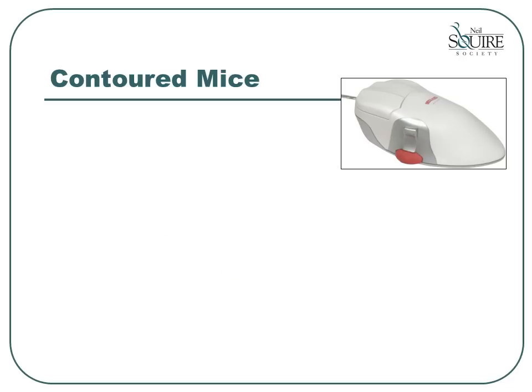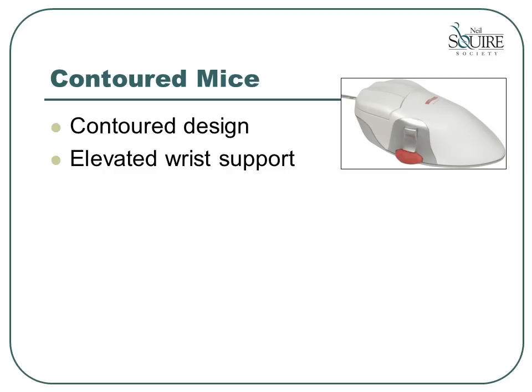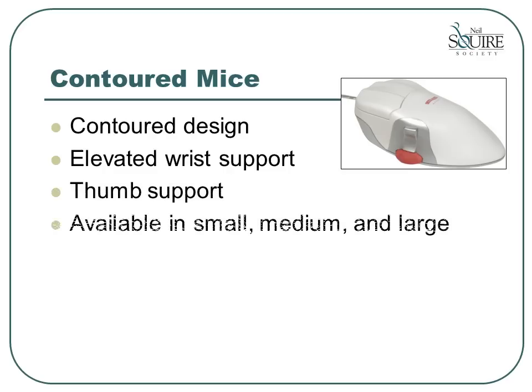There are a variety of contoured mice available on the market today. These mice are similar to standard mice but are designed to fit the shape of your hand. Some provide an elevated wrist support and a thumb support. They are available in a variety of sizes — this particular model comes in small, medium, and large. Although many contoured mice are only available in right-handed versions, a few have both right and left-handed versions. If you go to your local Staples or Office Depot, you'll find many contoured mice for sale. Take a moment to try out the various mice to see which kind fits your hand.